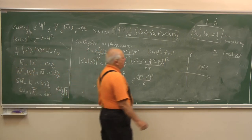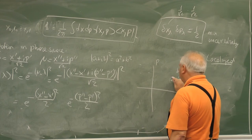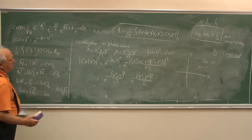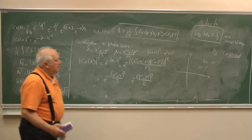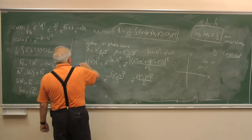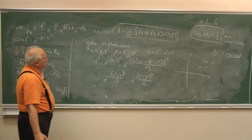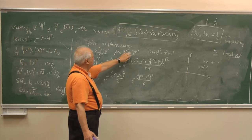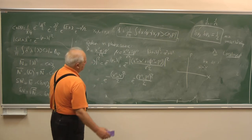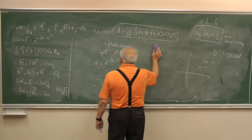That means if you are in the phase space at point (x′, p′), the probability of finding the wave packet drops in a Gaussian way exponentially as you move away. So these states |λ⟩ are localized in the phase space. If you move more than δx, δp, the probability of finding it will get reduced sharply.